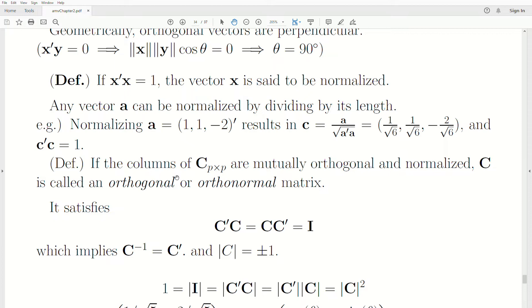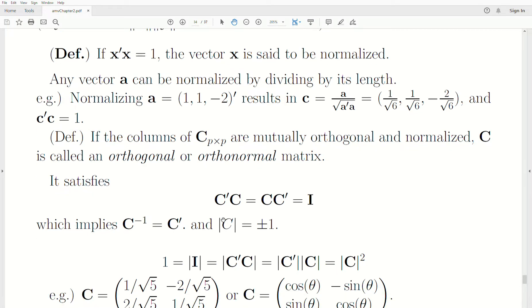Now if the columns of a matrix C, p by p, are mutually orthogonal and normalized, then that matrix C is called an orthogonal or orthonormal matrix. The vectors are orthogonal to each other, meaning each column is orthogonal to another column and it's normalized, so it has a length of one.